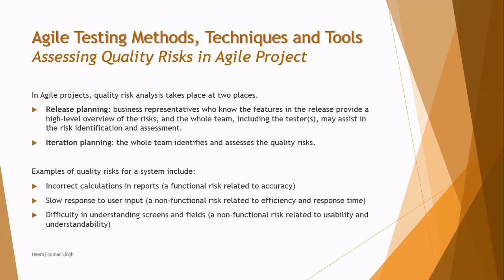Here are three examples of quality risk. First, incorrect calculation and reports. Second, slow response to user inputs — that is related to the quality characteristic of performance. Third, difficulty in understanding screens and fields, which relates to the quality characteristic of usability and understandability. This can be further broken down into suitability, learnability, and many other sub-characteristics.